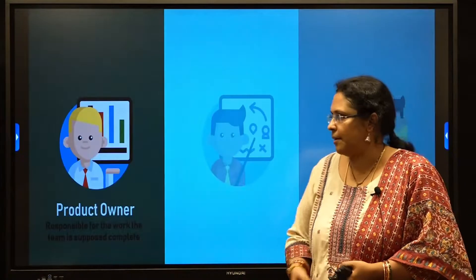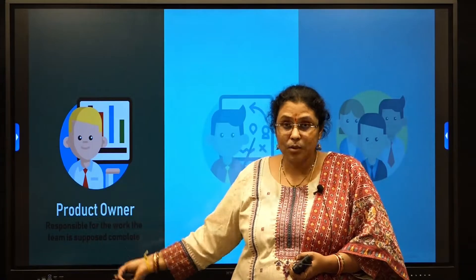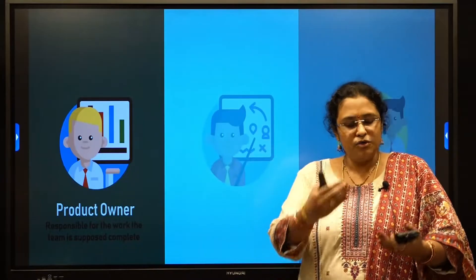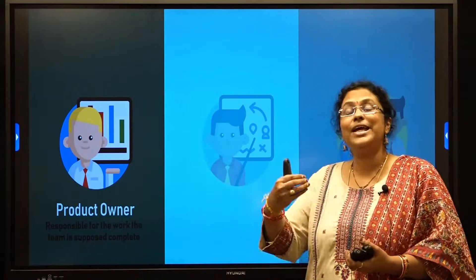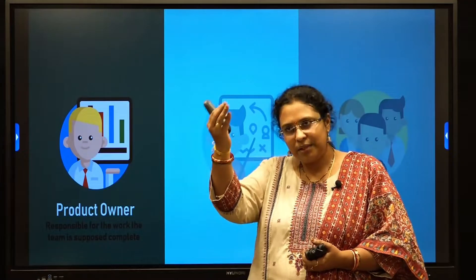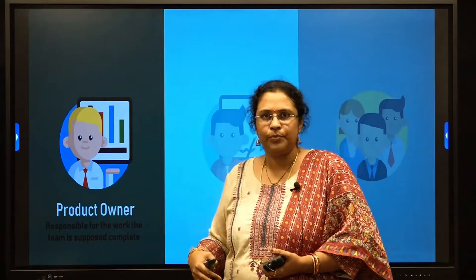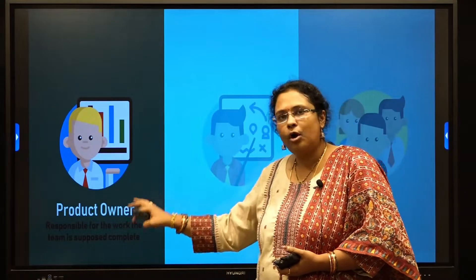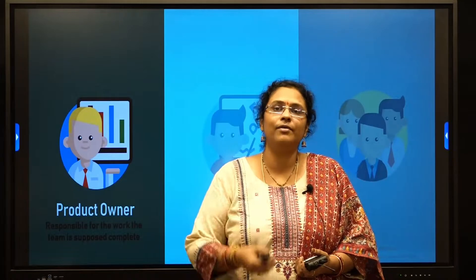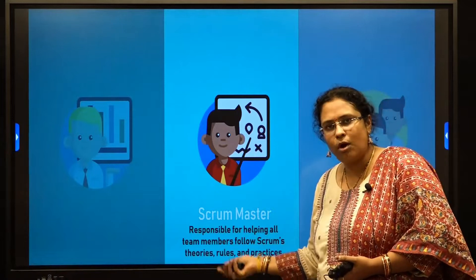Let us see who are the people involved in Scrum. The first person is the Product Owner. He is responsible to collect requirements from the customer, finalize those requirements, and assign a priority number to each requirement. The team takes the highest priority requirement and develops it first. The Product Owner is also responsible to make sure that the product is delivered to the customer on time.